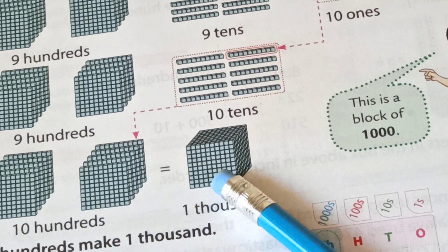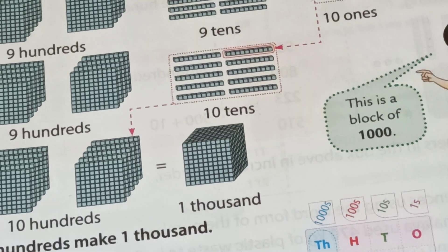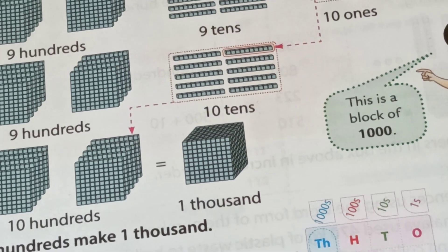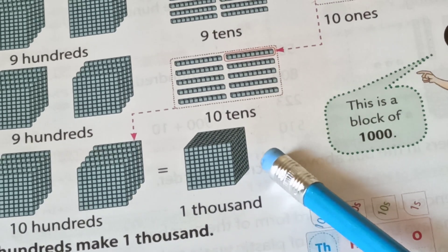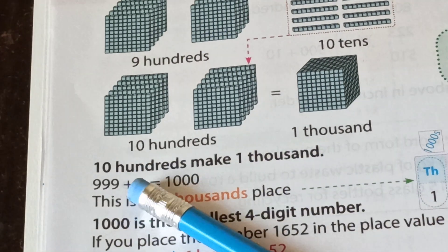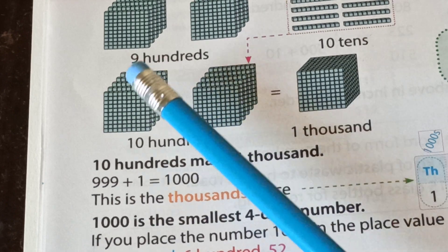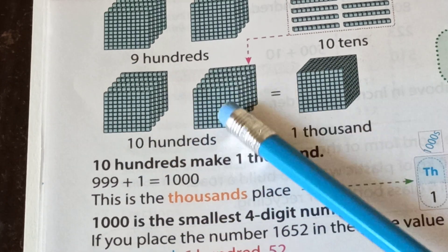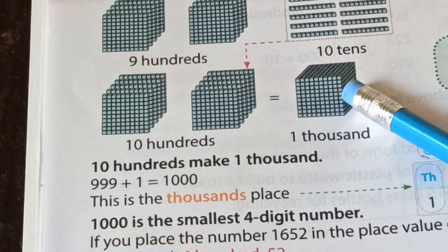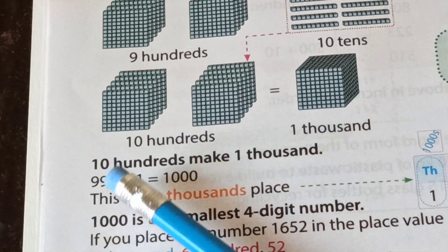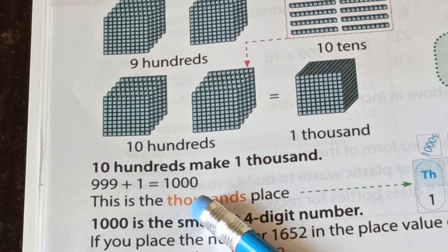Ten hundreds means one thousand. Ten hundred is equal to one thousand. This block is called one thousand. Ten hundreds make one thousand. Nine hundred ninety-nine plus one is equal to one thousand.